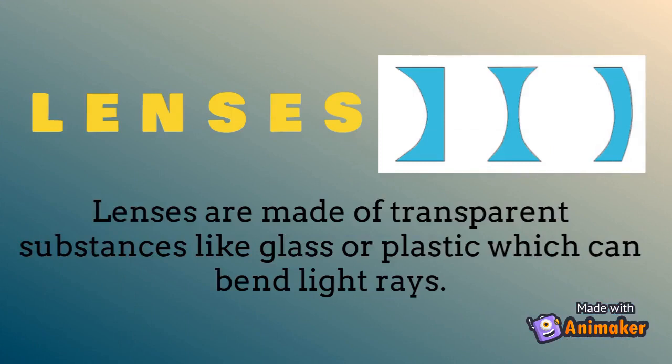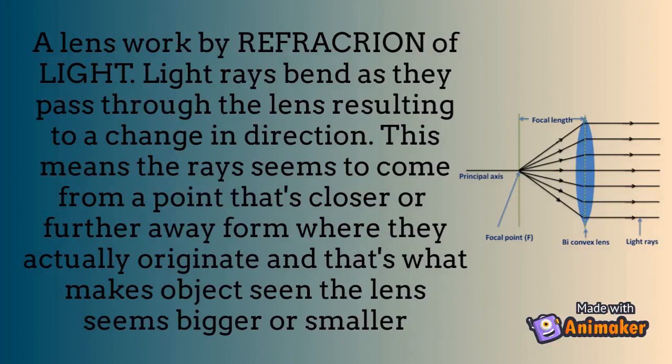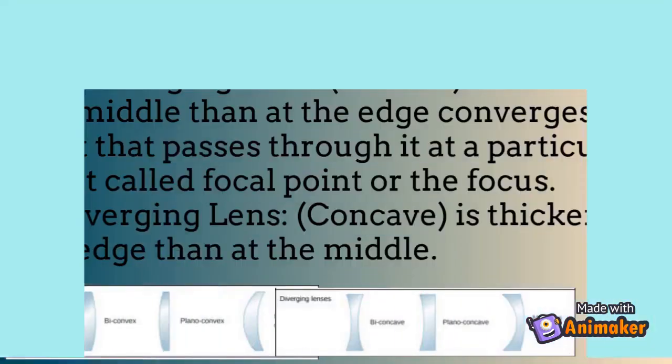A lens works by refraction of light — light rays bend as they pass through the lens, resulting in a change in direction. This means the rays seem to come from a point that is closer or further from where they actually originate, and that's what makes objects seen through the lens appear bigger or smaller.